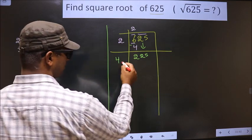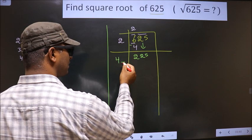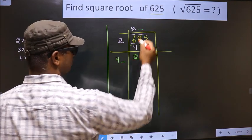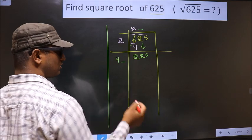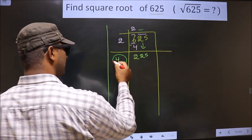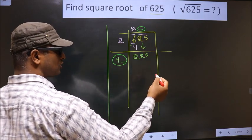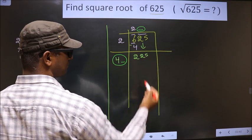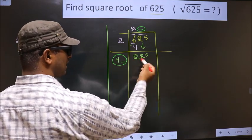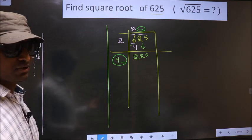We should write a number here. The condition is whatever number you write here, here also you should write the same number. And also when you multiply this number and this number, the resulting number should be either equal to this or smaller to this number, but not larger than this number.